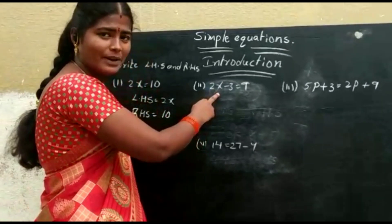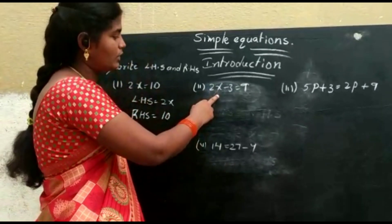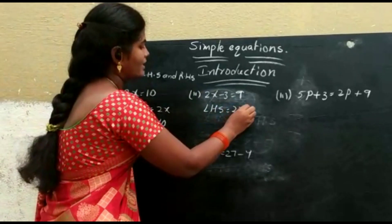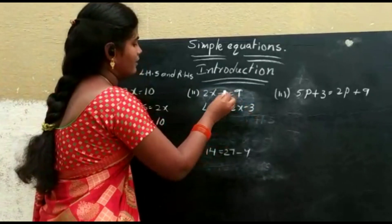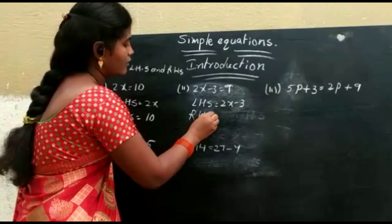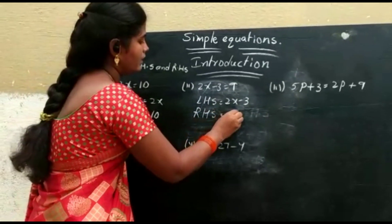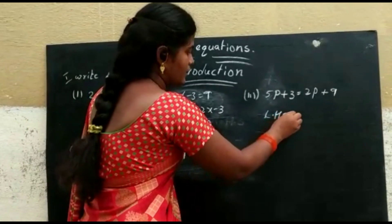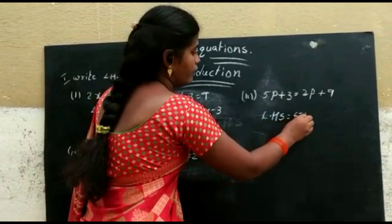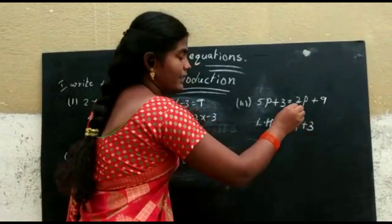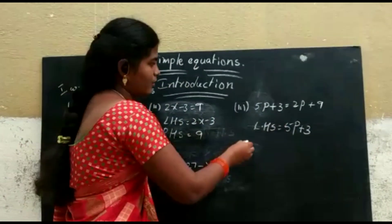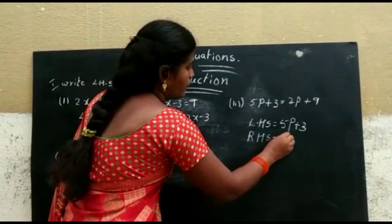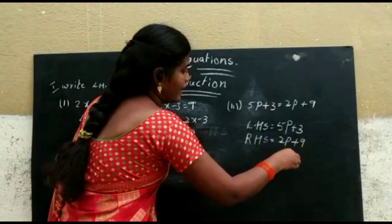RHS is equal to 10. Next one: 2x minus 3 is equal to 9. LHS is equal to 2x minus 3, and RHS is equal to 9. Next: LHS is equal to 5p plus 3, and RHS is equal to 2p plus 9.